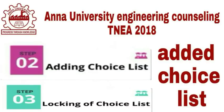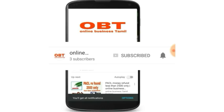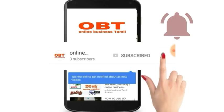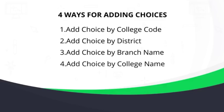In this video, you will see how to add an ad choice list. If you click the red button and subscribe, click the bell symbol.